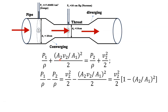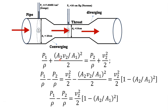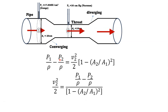Rearranging, we bring pressure terms to the left: P1/ρ − P2/ρ = V2²/2 − (A2·V2/A1)²/2. Taking V2²/2 as common: P1/ρ − P2/ρ = (V2²/2)·[1 − (A2/A1)²]. This gives us V2² = 2(P1 − P2)/ρ · 1/[1 − (A2/A1)²].